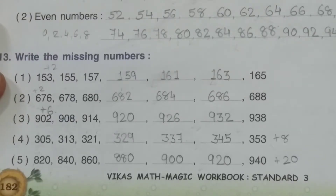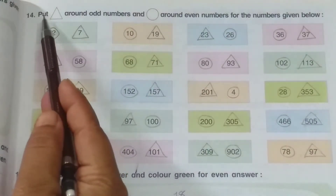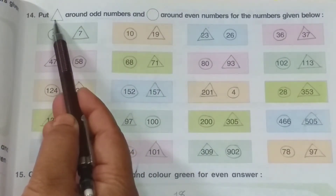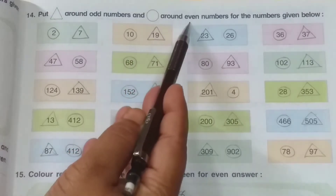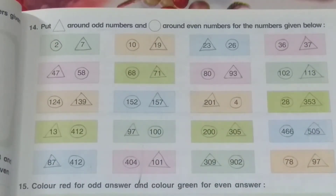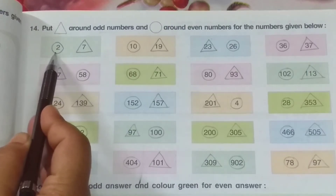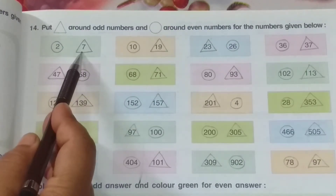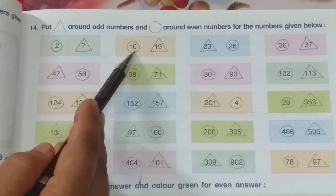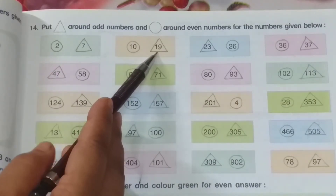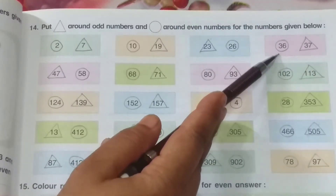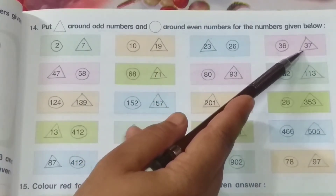Now see page number 183 — Main 14: Put a triangle around odd numbers and a circle around even numbers for the numbers given below. See: 2 is even, so put circle. 7 is odd, so make triangle. 10 is even, so circle. 19 is odd, so triangle. 23 is odd, so make triangle. 26 is even, so make circle. 36 — circle — why? It is even. 37 — triangle, so odd.